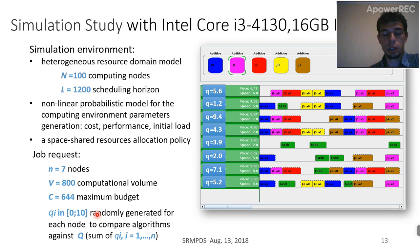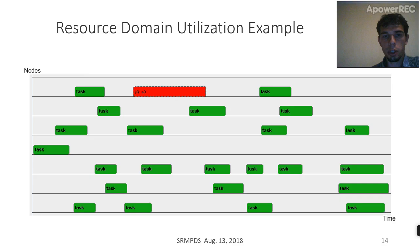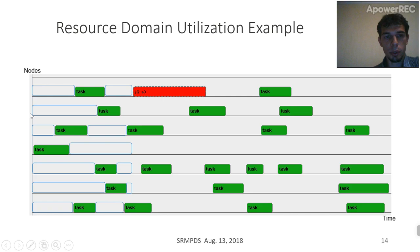The value Q was generated on the interval from 0 to 10, so if we have a window of seven nodes, the sum of Q should lie somewhere between 0 and 70. For a more general case, we introduced some initial utilization in our resource environment — these tasks were generated randomly. Here is an example of slots during which nodes are available to perform a user job.